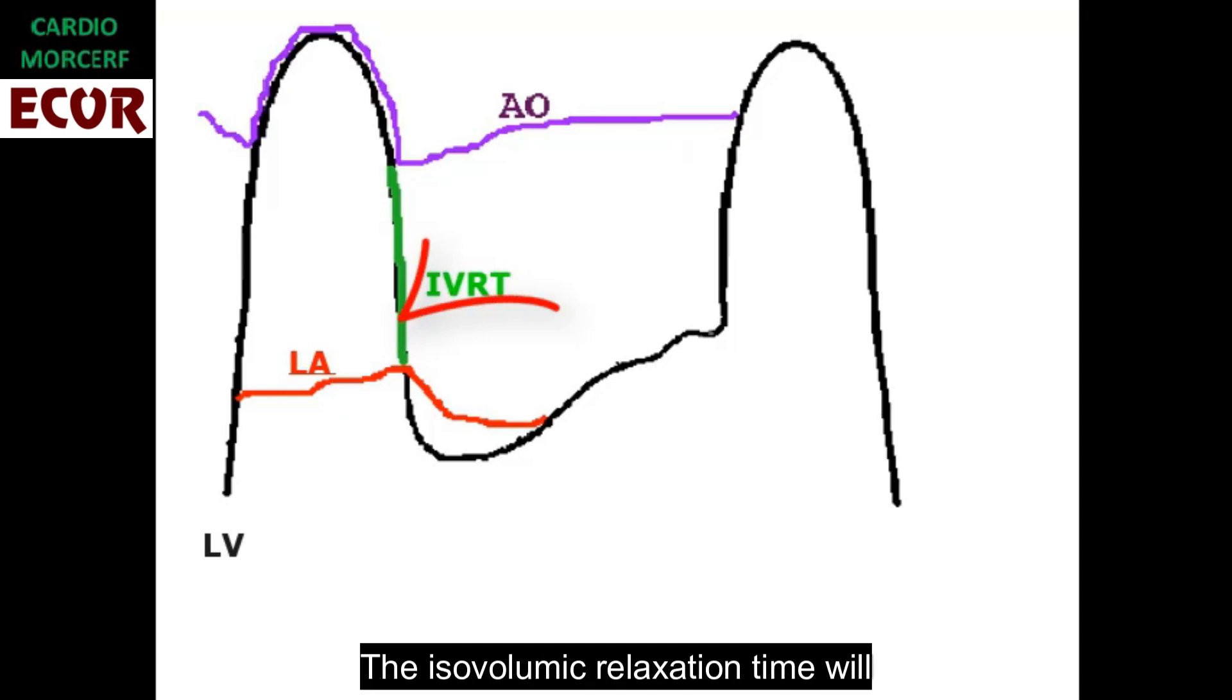As the patient gets worse, the isovolumic relaxation time will decrease, since the distance from the aortic closure to mitral opening will be less.